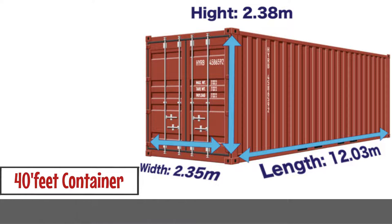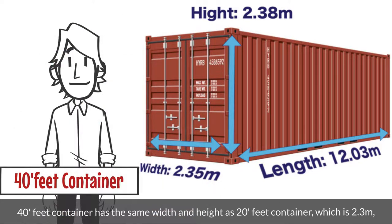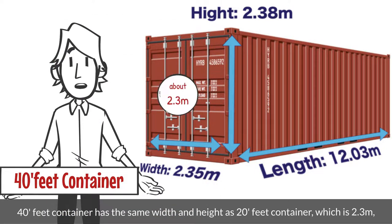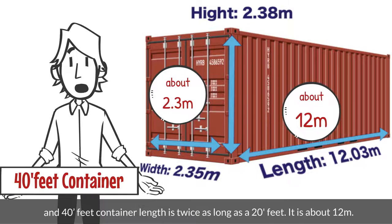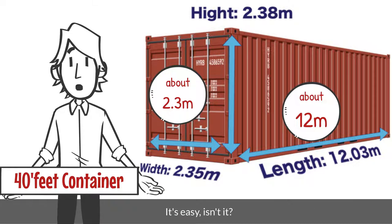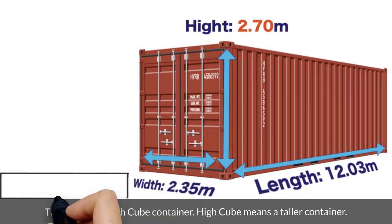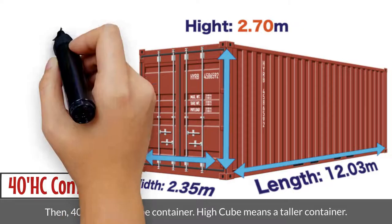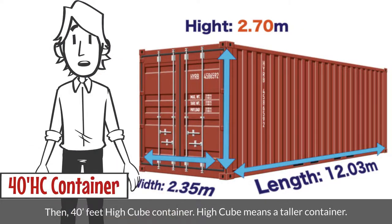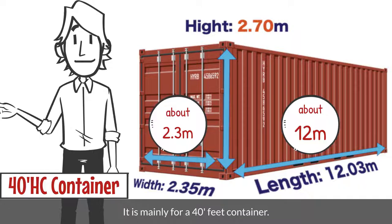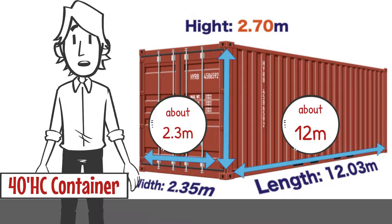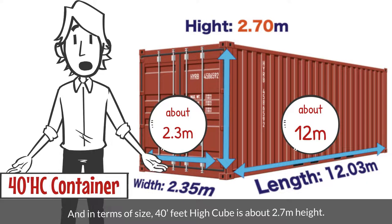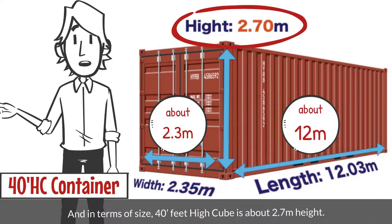And the 40-feet container. A 40-feet container has the same width and height as a 20-feet container, which is 2.3 meters, and its length is twice as long as a 20-feet — about 12 meters. Then, the 40-feet high cube container. High cube means a taller container, and it is mainly for 40-feet containers. A 20-feet high cube container is not common. In terms of size, the 40-feet high cube is about 2.7 meters in height.